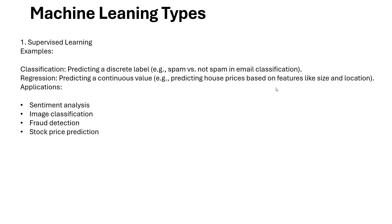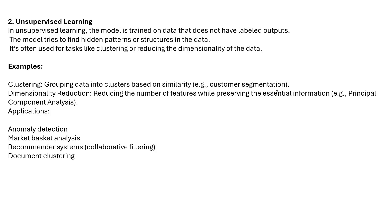Examples of supervised learning include sentiment analysis, image classification, fraud detection, and stock price prediction. The second type is unsupervised learning, where the model is trained on data that does not have labeled output — unlike supervised learning where labeled output is provided.